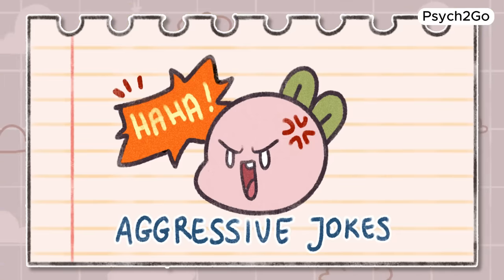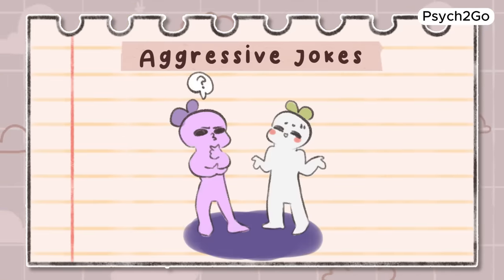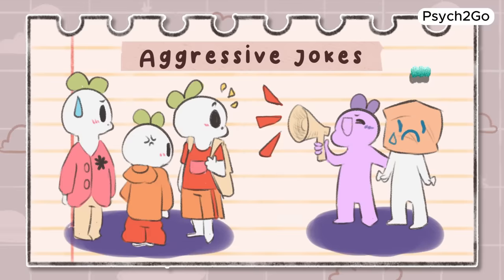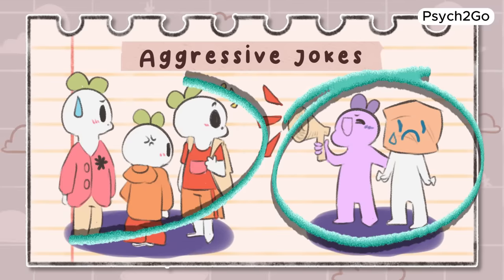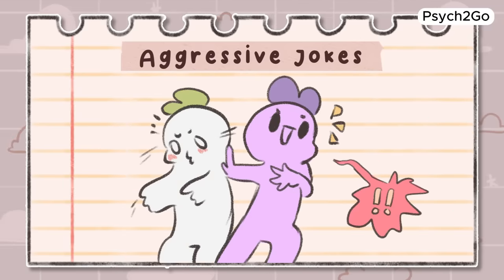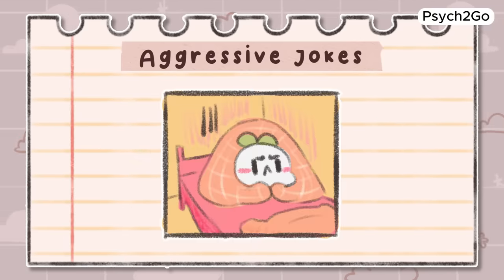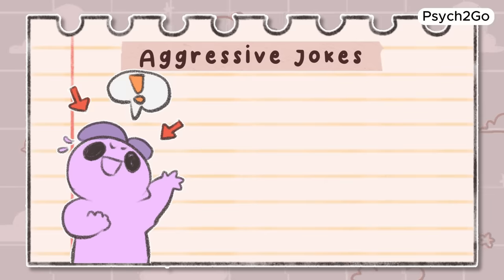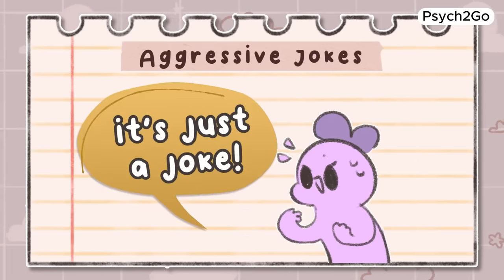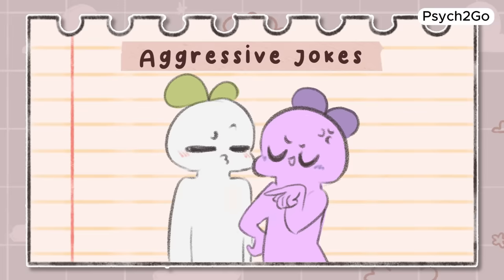Aggressive jokes. When someone makes a joke at your expense, they're not only trying to manipulate you, but also those around you. This tactic is used to exclude you and make you feel like an outsider. The person who makes the jokes will often downplay what they've said or brush it off as just a joke, purposefully making you feel bad.